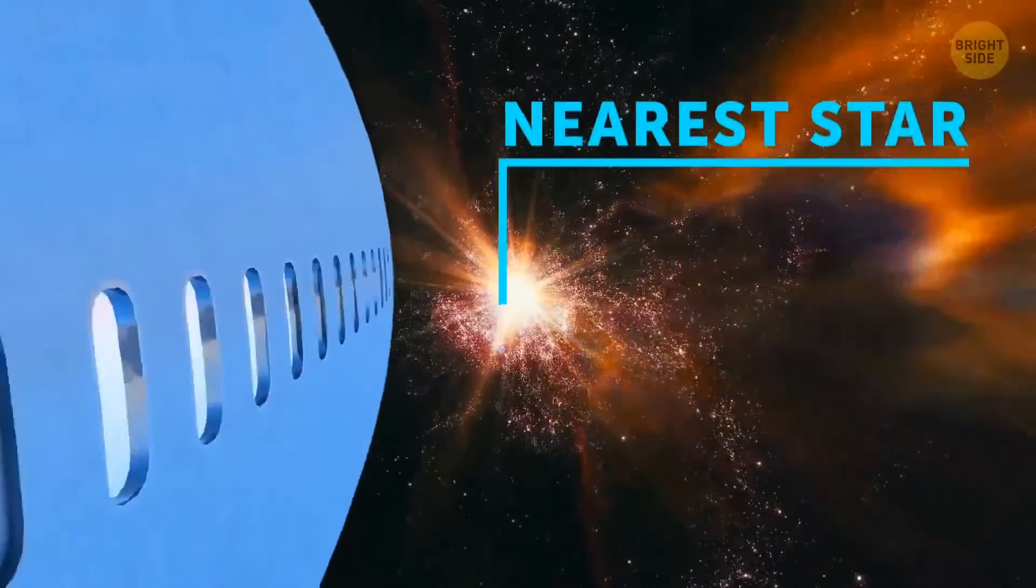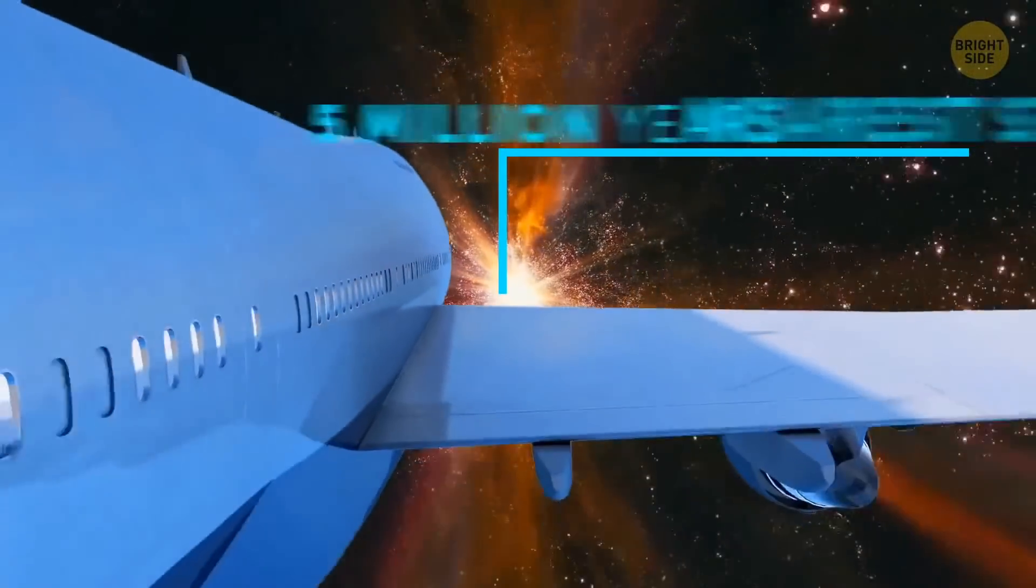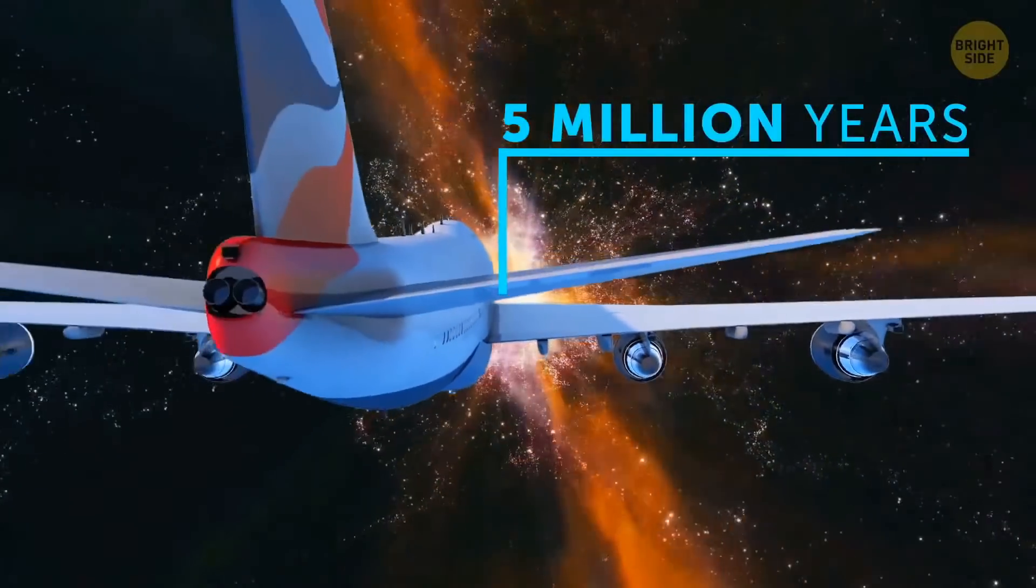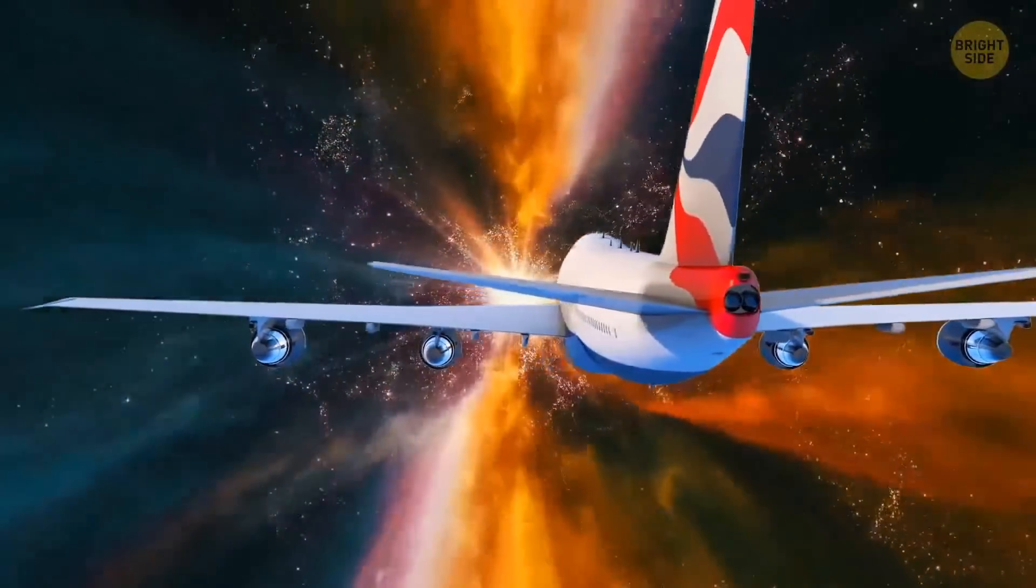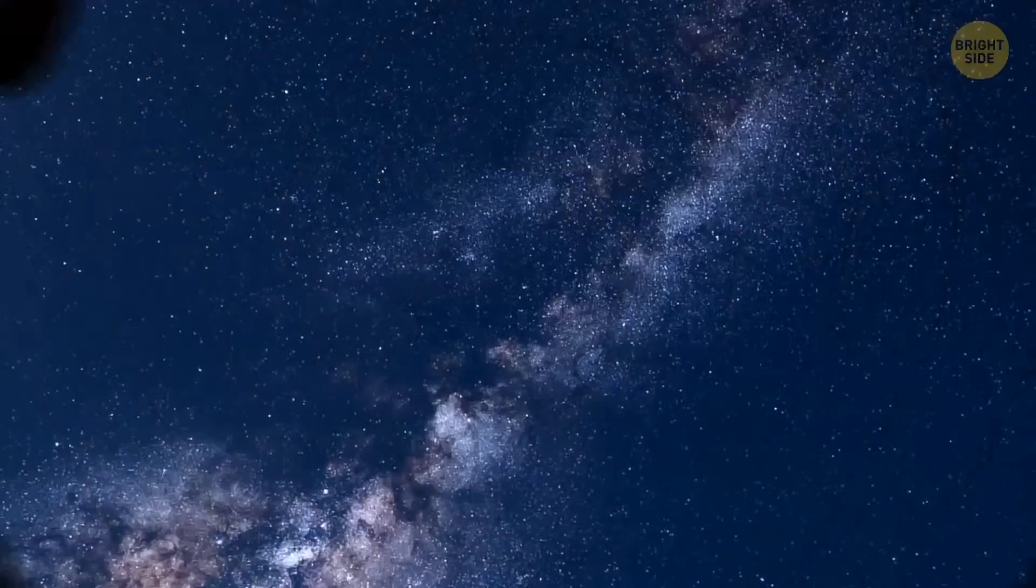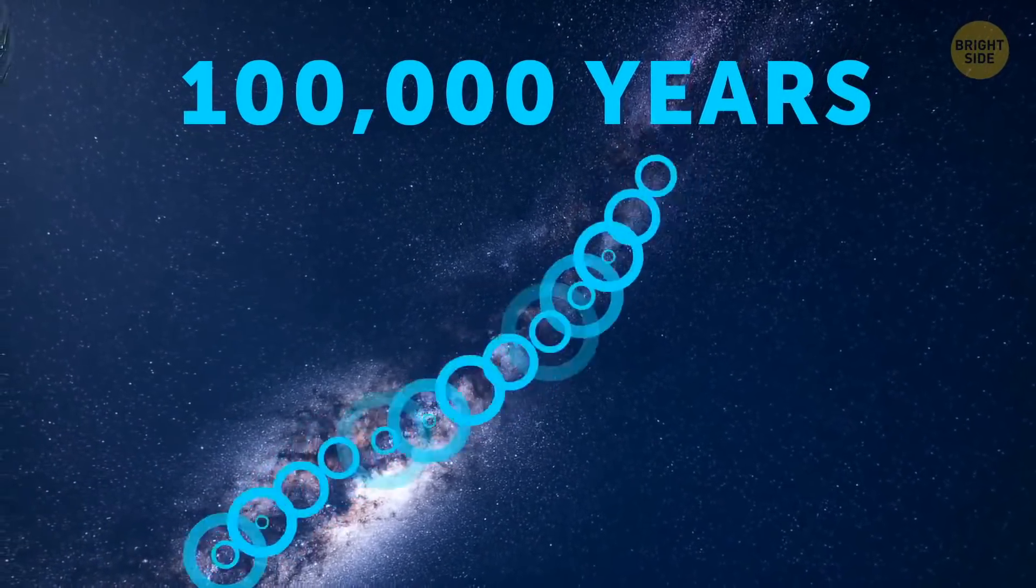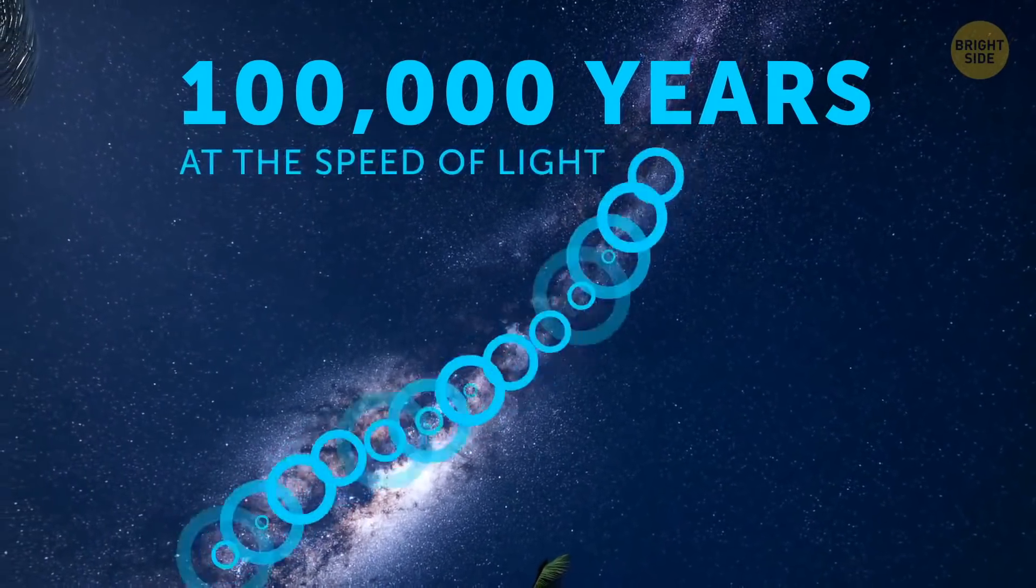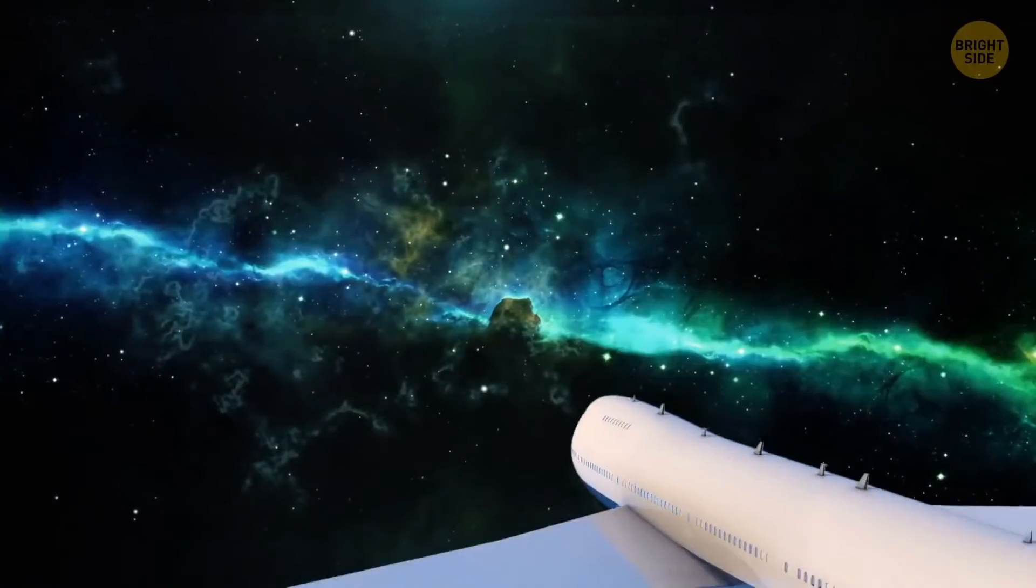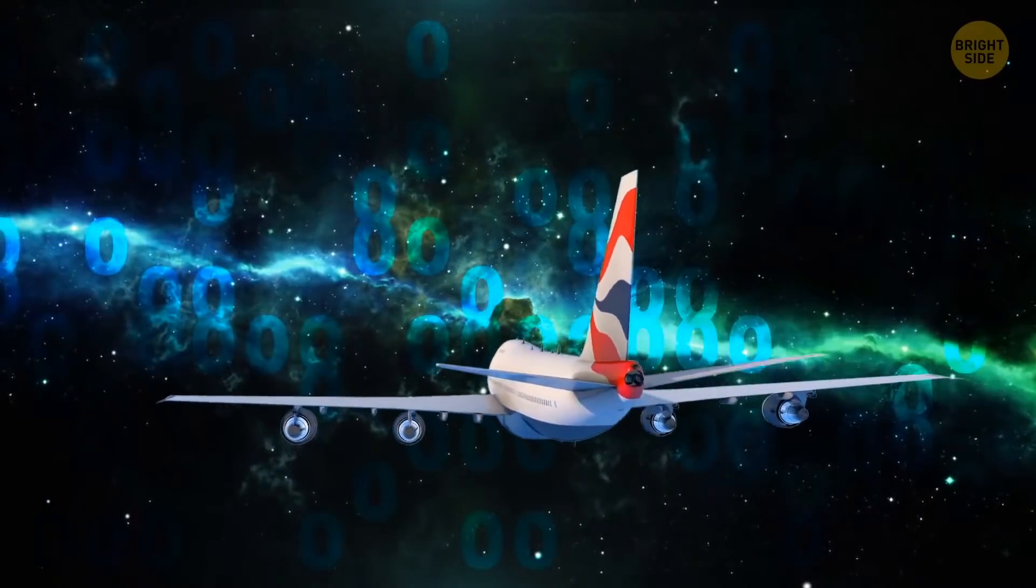A trip to the nearest star, apart from the Sun, would take you 5 million years on a commercial airplane. That's what I call a long-haul flight. It would take you about 100,000 years to travel from one end of our Milky Way galaxy to the other at the speed of light. On a plane, that's just too many zeros to fit into a single screen.